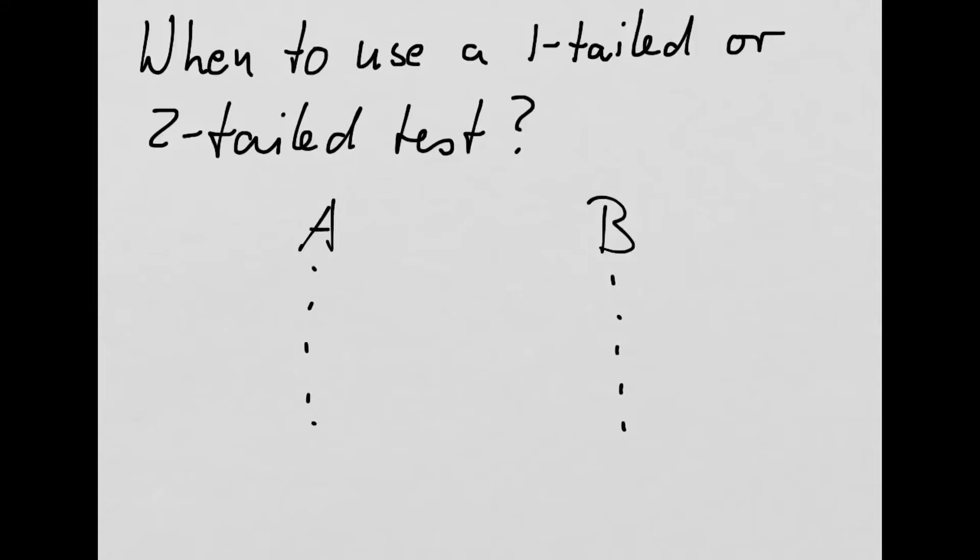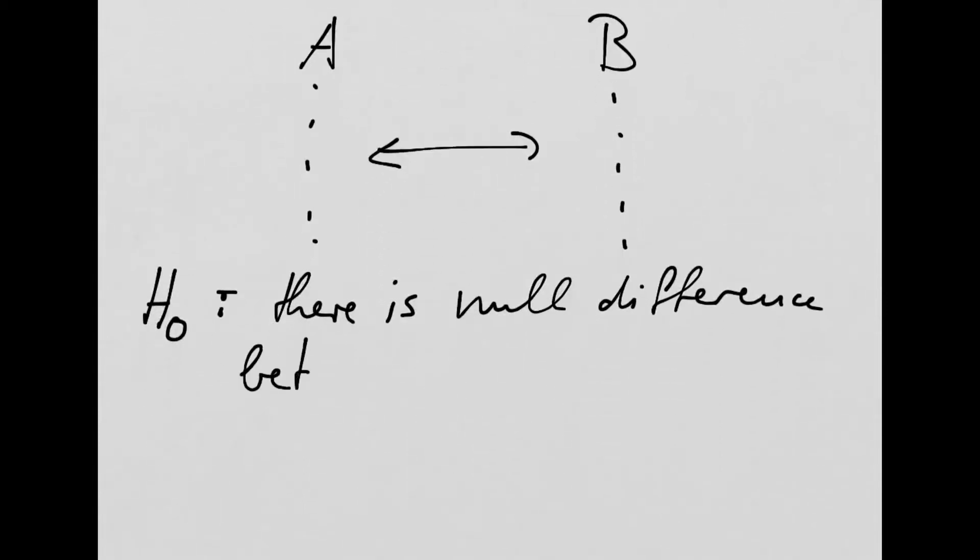So the first thing that we start off with is our null hypothesis. This is the starting point. And the null hypothesis basically says there is no difference between the two data sets, other than caused by simply the sampling error. And the sampling error we will never get rid of.